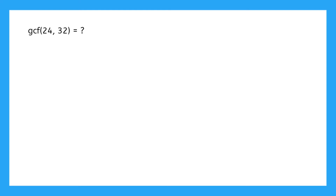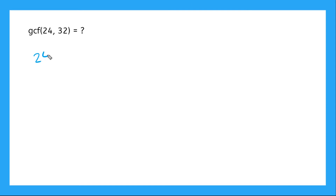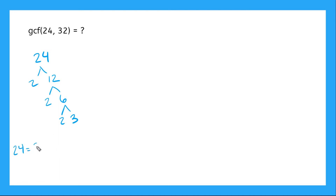So let's make our tree for 24. Our tree for 24 starts with a 2 and a 12, and 12 turns into 2 and 6, and 6 turns into 2 and 3. So I can write 24 is equal to 2 times 2 times 2 times 3.